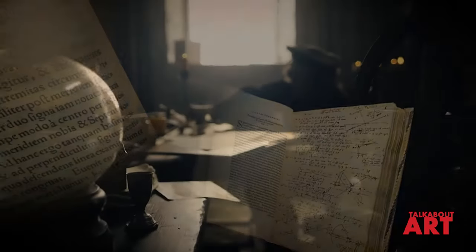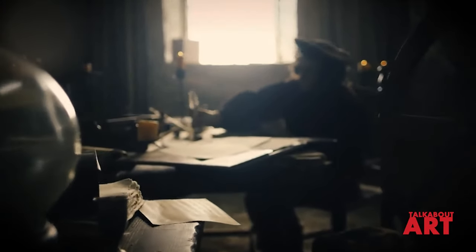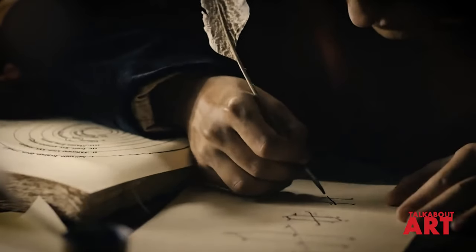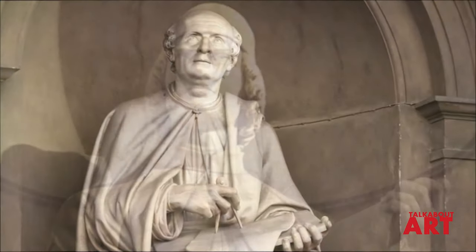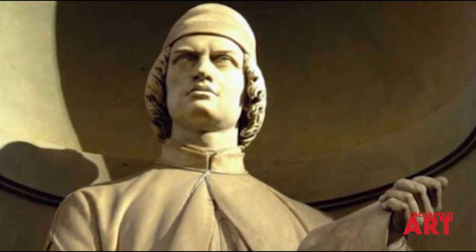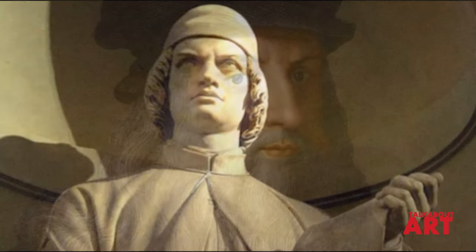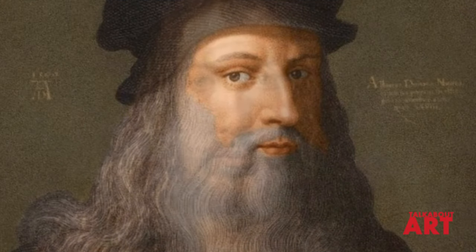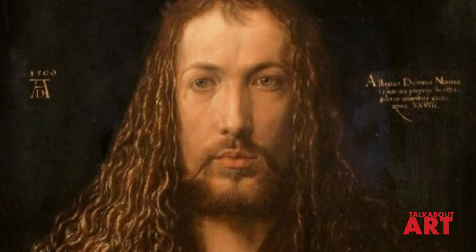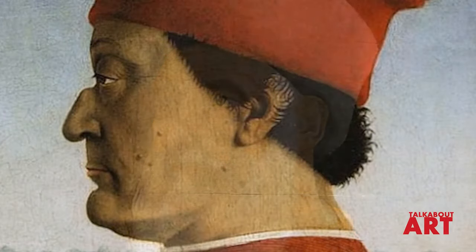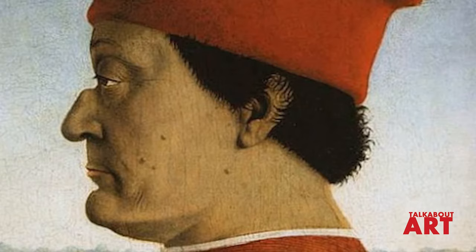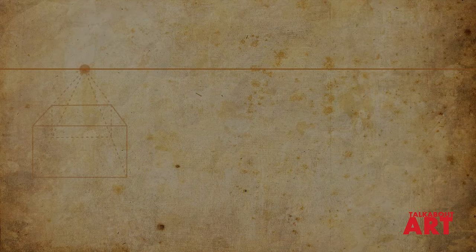The formation of linear perspective as a science took place during the Renaissance. Architect Filippo Brunelleschi is often cited as its father. Architect Leon Battista Alberti, artist Leonardo da Vinci, Albrecht Dürer, Paolo Uccello, and Piero della Francesca played an important role in its creation and development. This perspective has many varieties, the definitions of which are controversial.